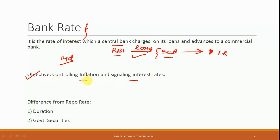The second objective is with regards to controlling inflation. If the RBI wants to increase the liquidity in the market or in the economy, what RBI is going to do is it is going to lower the bank rate. So obviously, banks are going to take more loans from RBI and they are further going to give them out as loans, and the supply of money is going to increase, and inflation is what is going to increase.